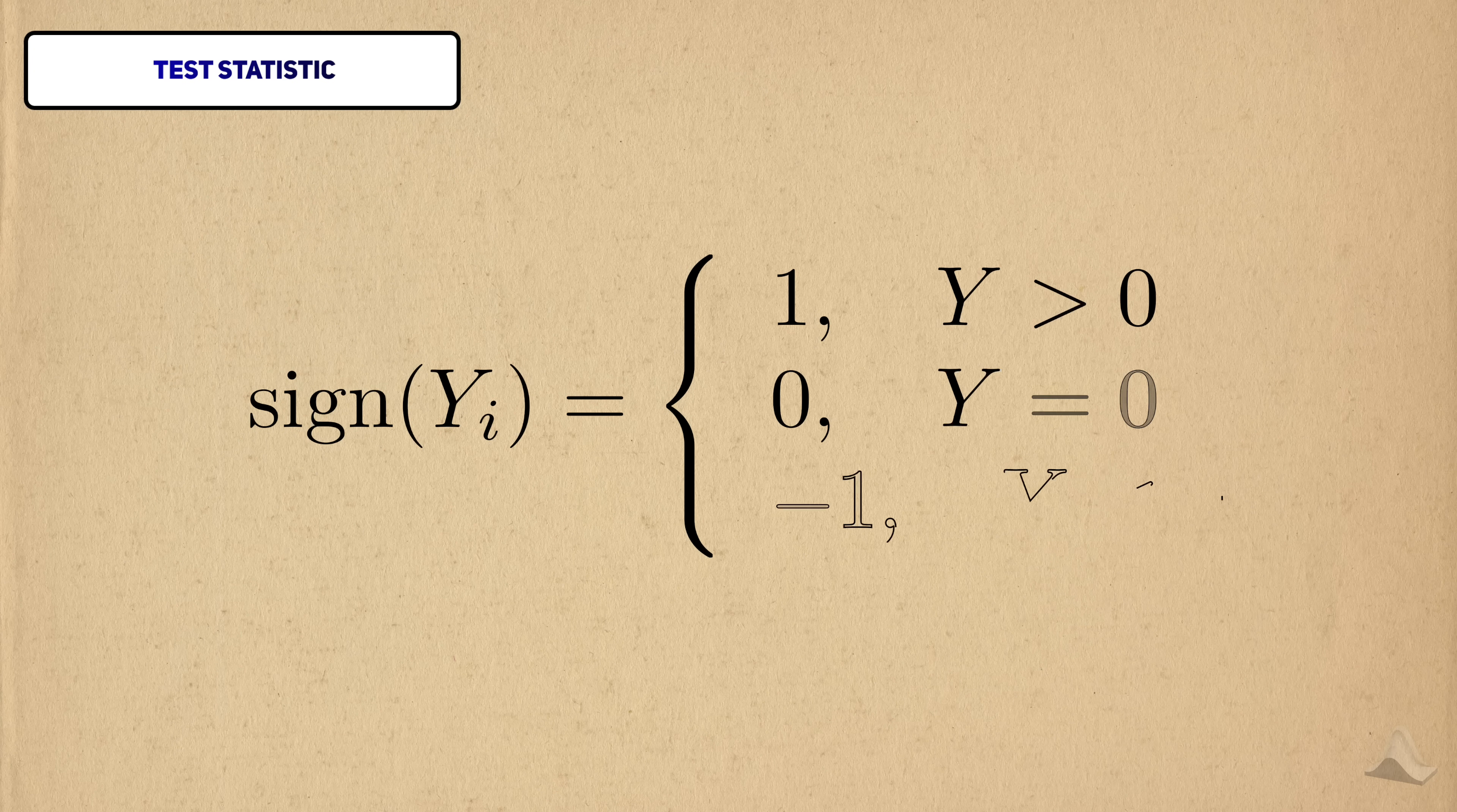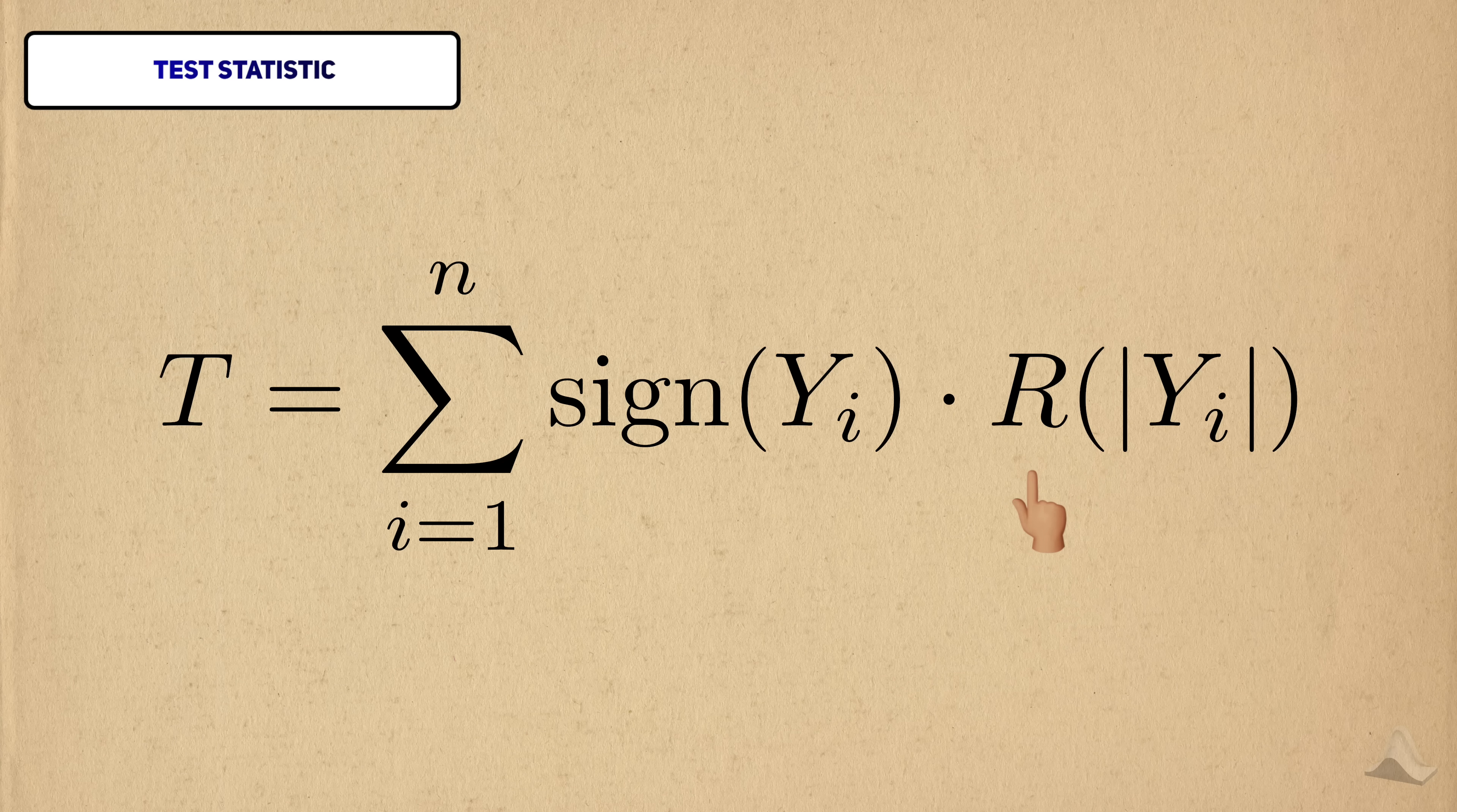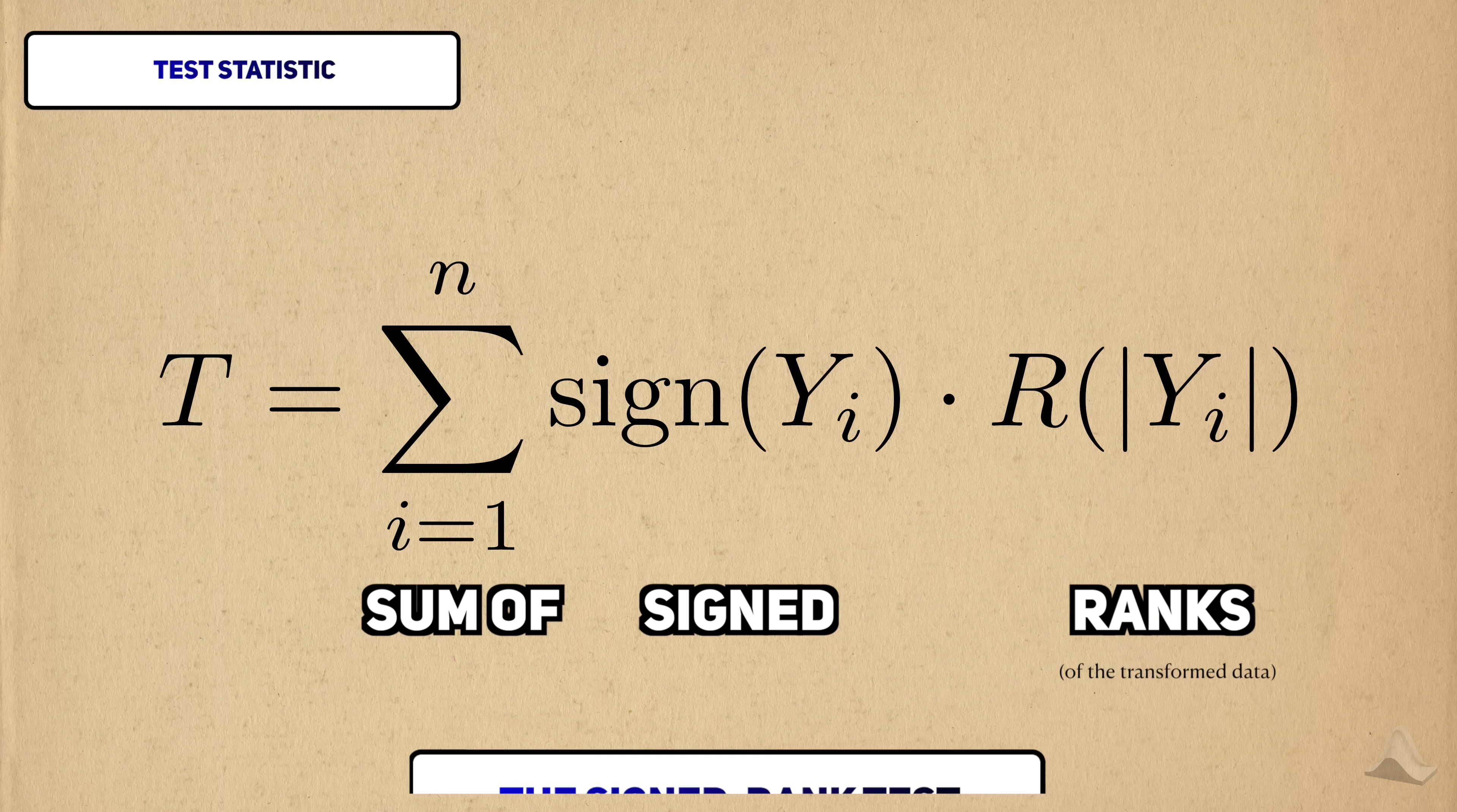Since the distribution is continuous, the probability that y exactly equals zero is zero, so we don't have to worry about it. This term here has two layers to it. On the inside, we have the absolute value of the transformed observation, or how far it is from zero. The sign function handles the sign of the data, and this term handles the magnitude. This outer function r gives the rank of whatever is inside it, so it's ranking the magnitudes of the transformed data. If there are n observations in the dataset, then the rank function ranges from 1 to n. Overall, we would interpret the statistic as being the sum of the signed ranks of the transformed data, and that's what gives the test its name.